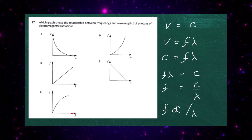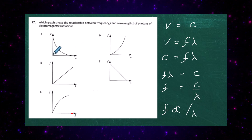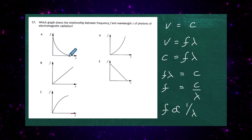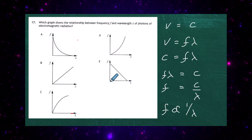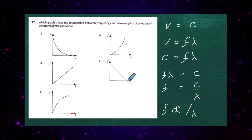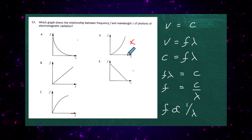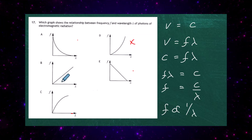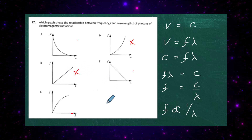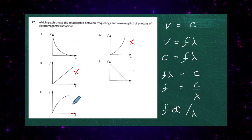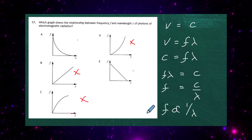We can reason through the graphs: if you make lambda very big, the frequency should be very small. Two candidate graphs show that behaviour. However, graphs where frequency increases as wavelength increases, or where frequency is directly proportional to lambda, can be ruled out. The final option where frequency becomes very large and levels out as lambda increases is also eliminated. So we're left with a choice of two graphs.